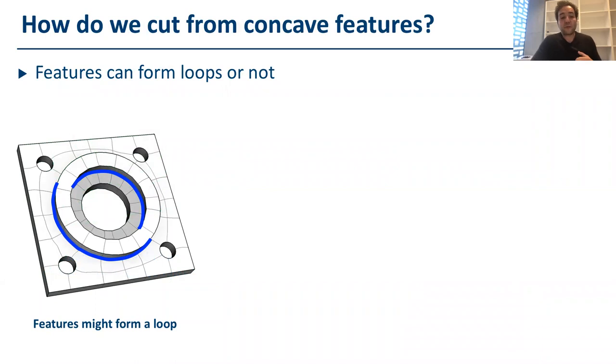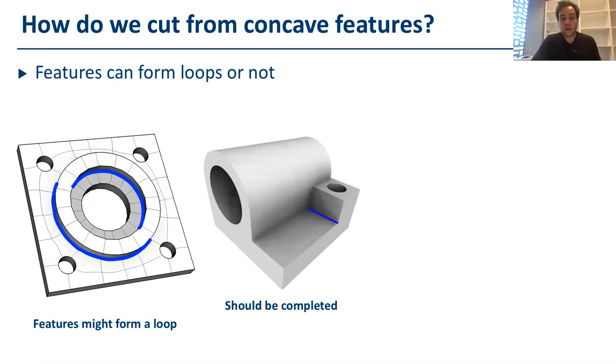So, if we consider a concave feature on a shape, they might be already close to a loop and then we can use them directly to cut the volume or they should be non-completed loops. There should be some concave features that do not complete a loop.